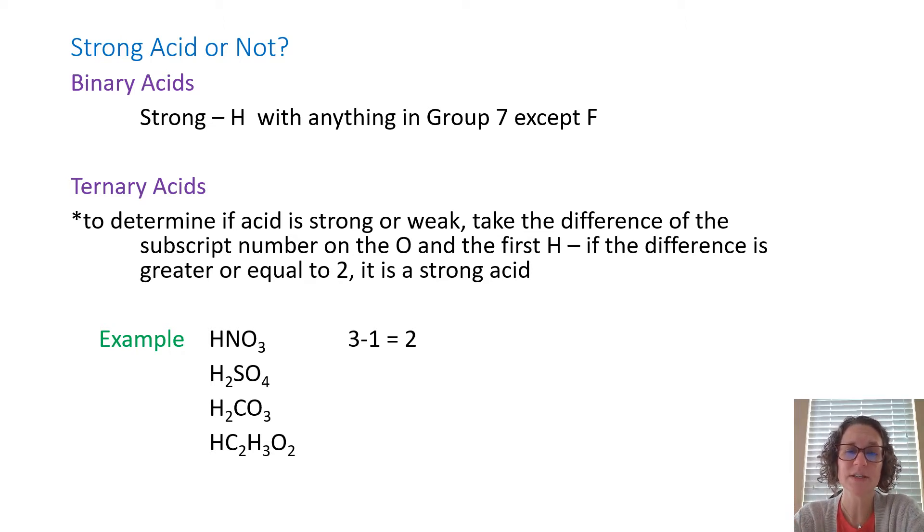So HCl, HBr, HI, all those guys, all of those are going to be strong. Now ternary is a little bit different because you actually get to do a little math. So what you would do is take the difference of the subscript number on the O and the first H. Some of these are going to have multiple H's. So that's why we clarify with the first H. If the difference is two or more, it's a strong acid. So I've got nitric acid is my first example there. And so the three is the three on the O. The one is that understood one that's right there with the H. Three minus one is two. So I know that this is a strong acid.